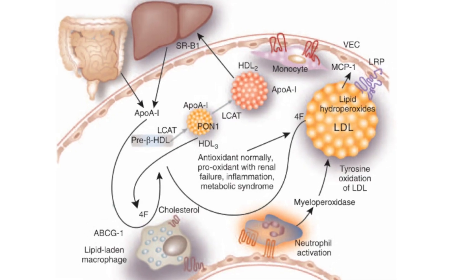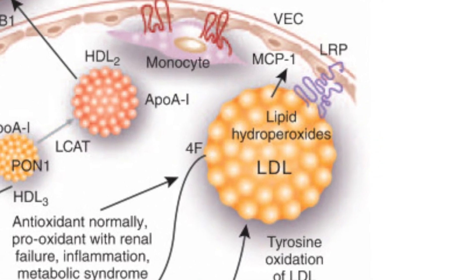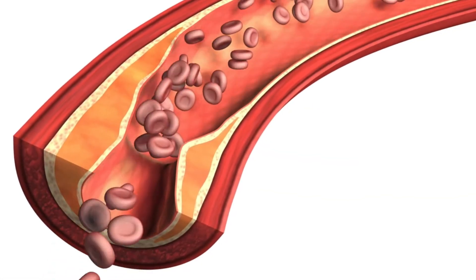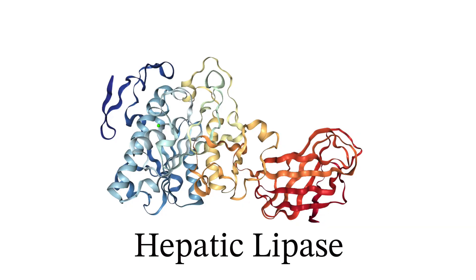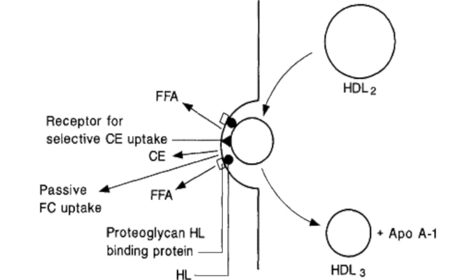LDL, meanwhile, delivers fat away from the liver and delivers fat molecules to our cells, but is implicated in plaque accumulation in the arteries. But how do steroids fit in here? Well, hepatic lipase is an enzyme heavily involved in this whole process, and it is responsible for converting the large HDL molecules to smaller HDL molecules.